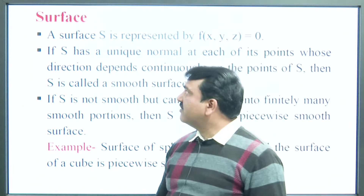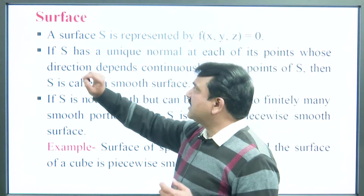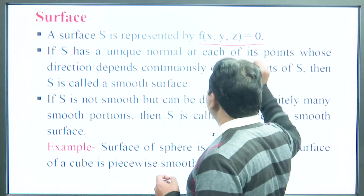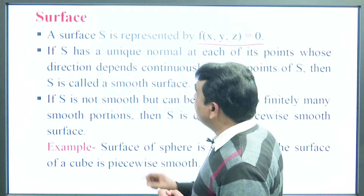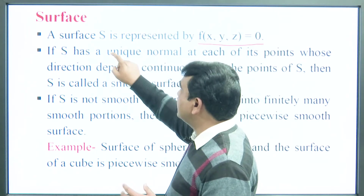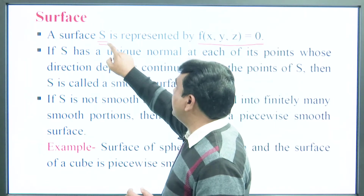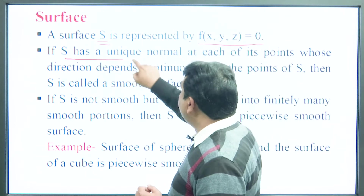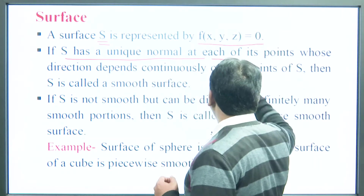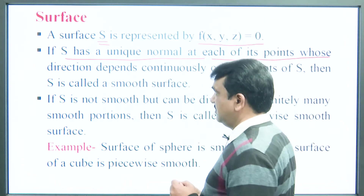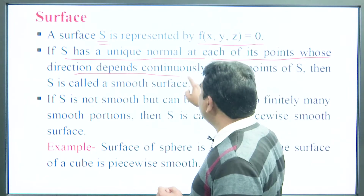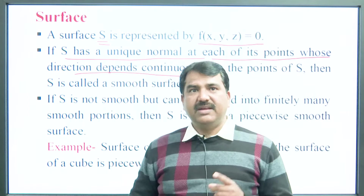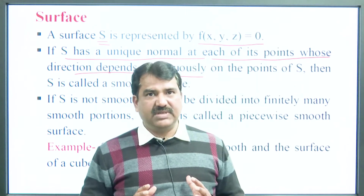Let us start with the definition of the surface. Any expression represented in the form f equal to 0 is a surface, and generally a surface is denoted by S. If S has a unique normal at each of its points whose direction depends continuously on the points of S, then S is called a smooth surface.